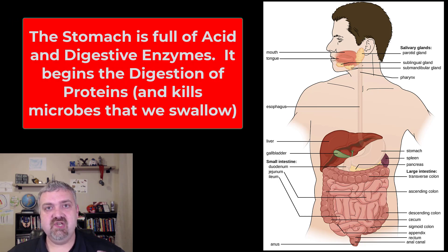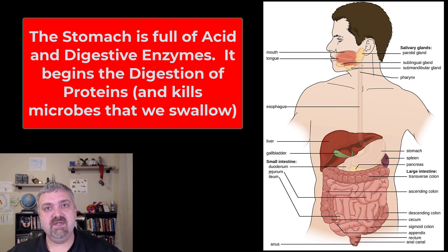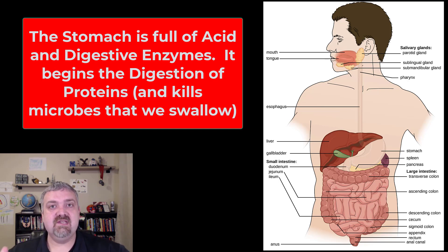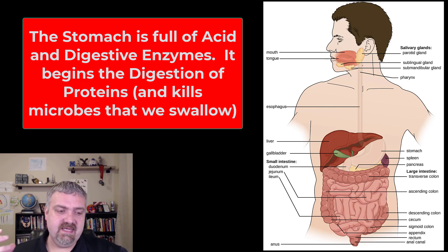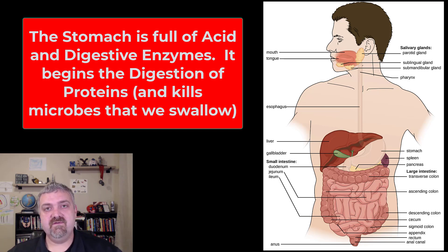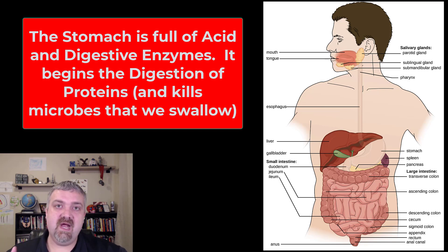The stomach is basically a chamber full of acid with a really low pH, and there are also digestive enzymes present. The primary function of the stomach is to churn and mix food, combining it with this acid and digestive enzymes to continue the digestive process. Think of the stomach primarily in terms of protein, because the hydrochloric acid in your stomach is going to denature the proteins you ate, and pepsin — the main digestive enzyme in the stomach — is going to break down proteins too. The more protein there is in a meal, generally the longer the food will sit in your stomach.